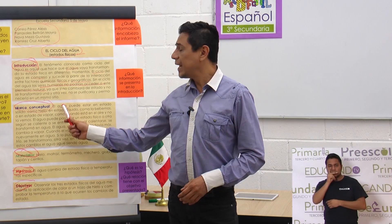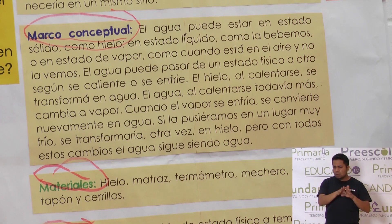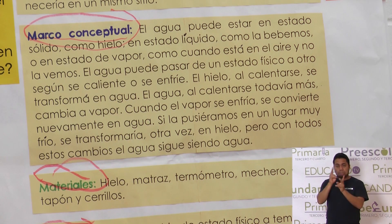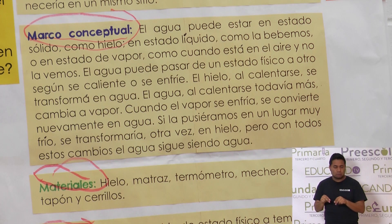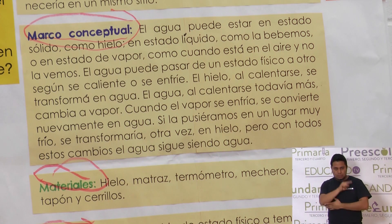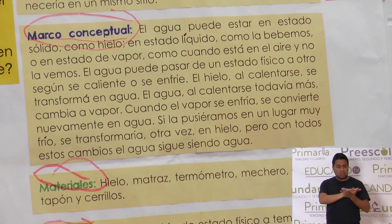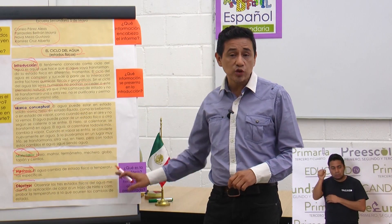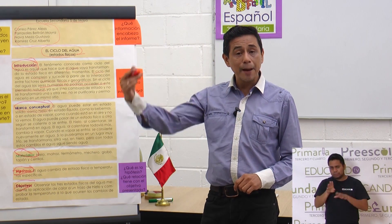Dice el marco conceptual: El agua puede estar en estado sólido, como hielo; en estado líquido, como la bebemos; o en estado de vapor, como cuando está en el aire y no lo vemos. El agua puede pasar de un estado físico a otro según se caliente o se enfríe. El hielo, al calentarse, se transforma en agua. El agua, al calentarse todavía más, cambia a vapor. Cuando el vapor se enfría, se convierte nuevamente en agua. Si la pusiéramos en un lugar muy frío, se transformaría otra vez en hielo. Pero con todos estos cambios, el agua sigue siendo agua.